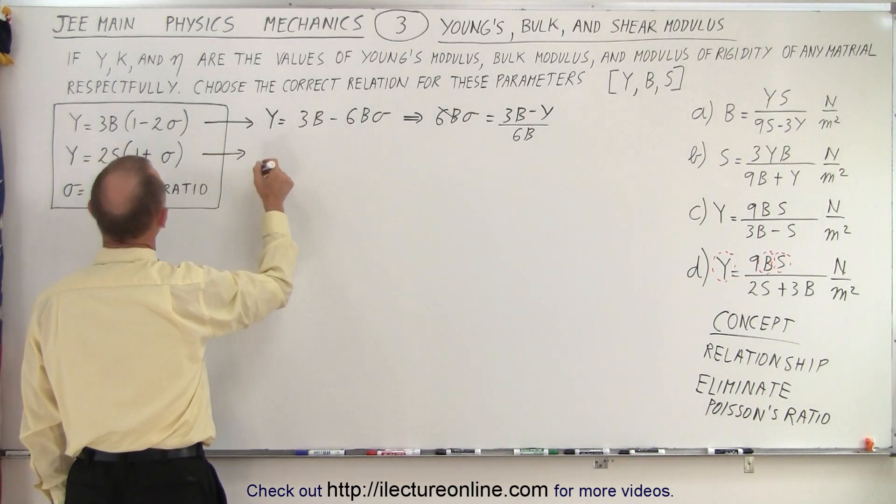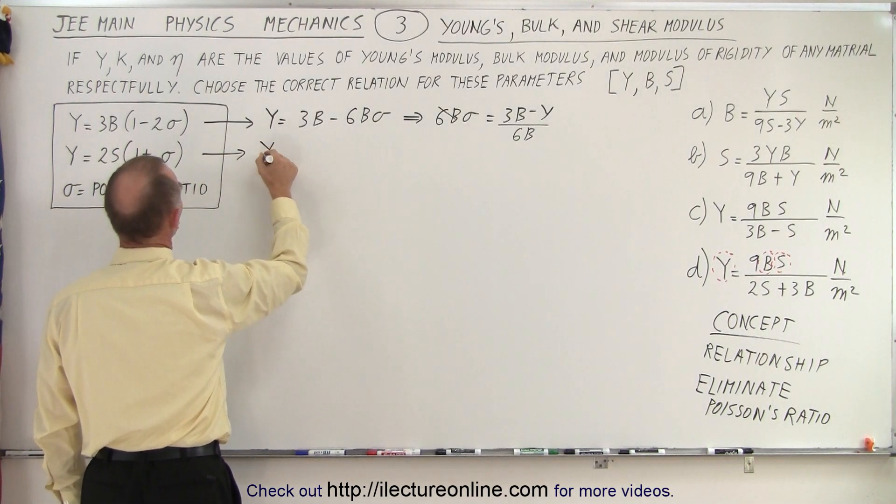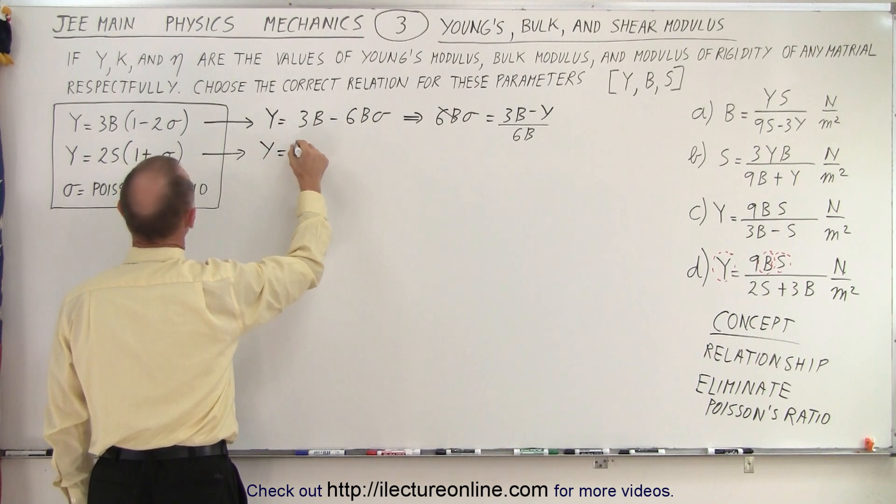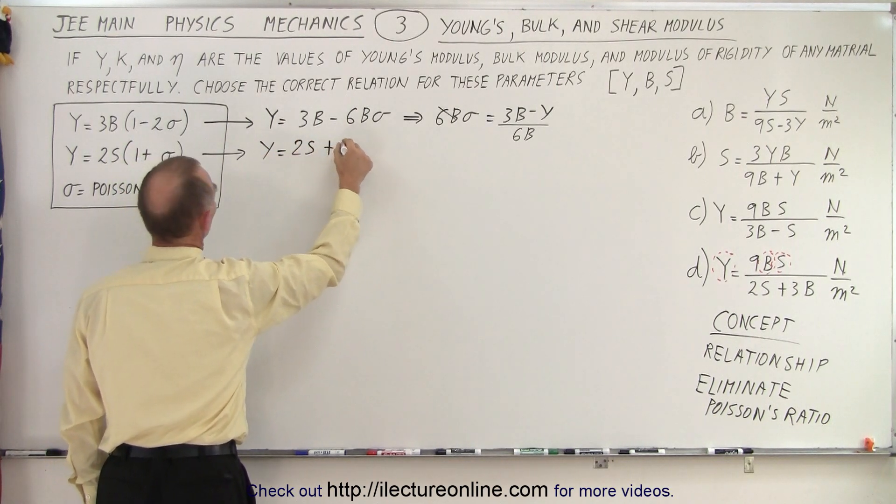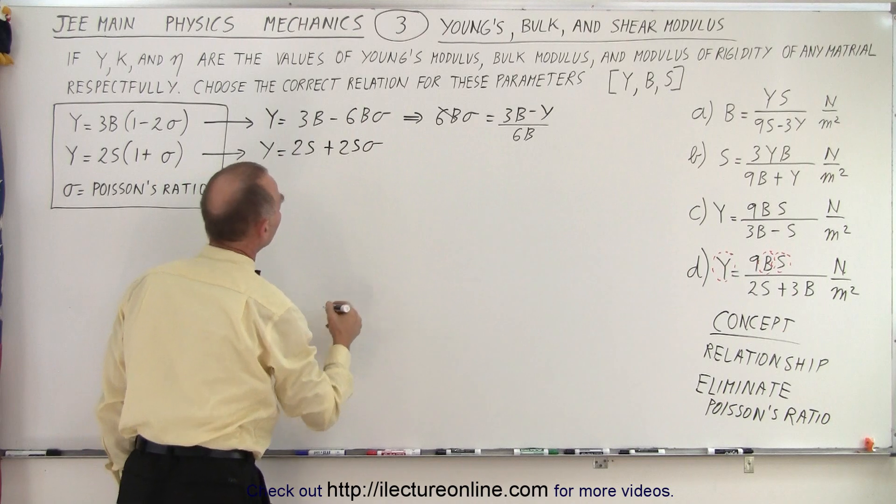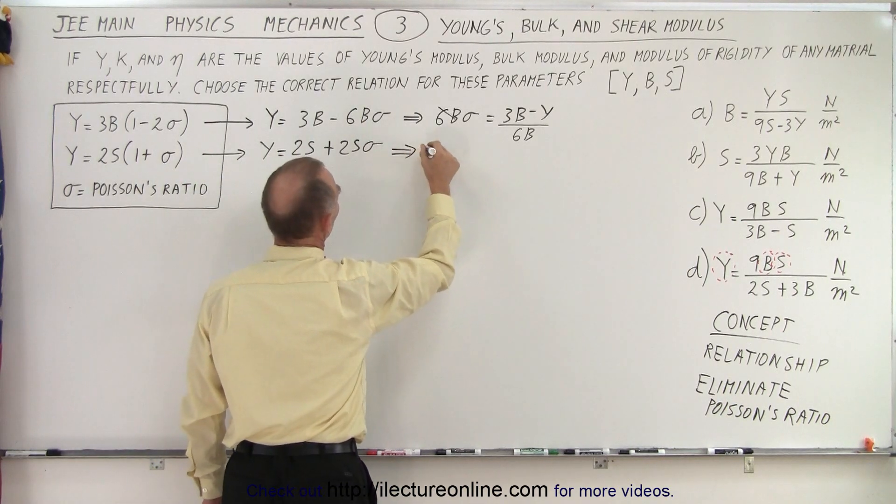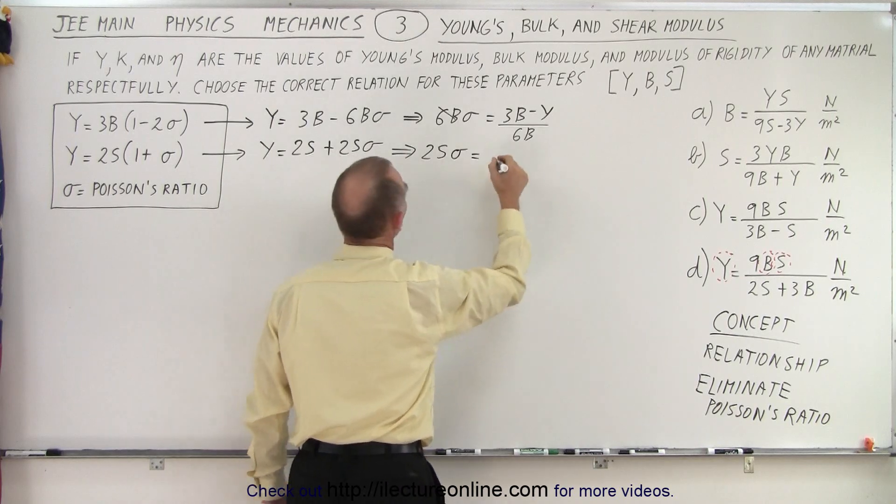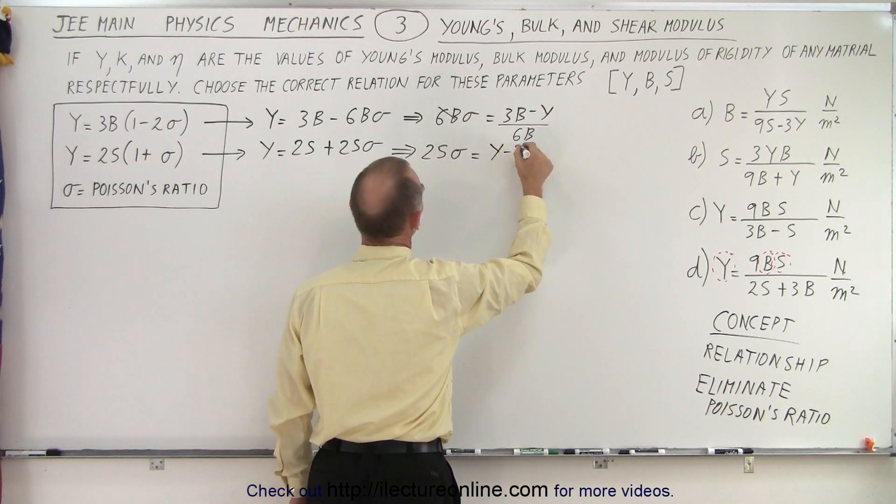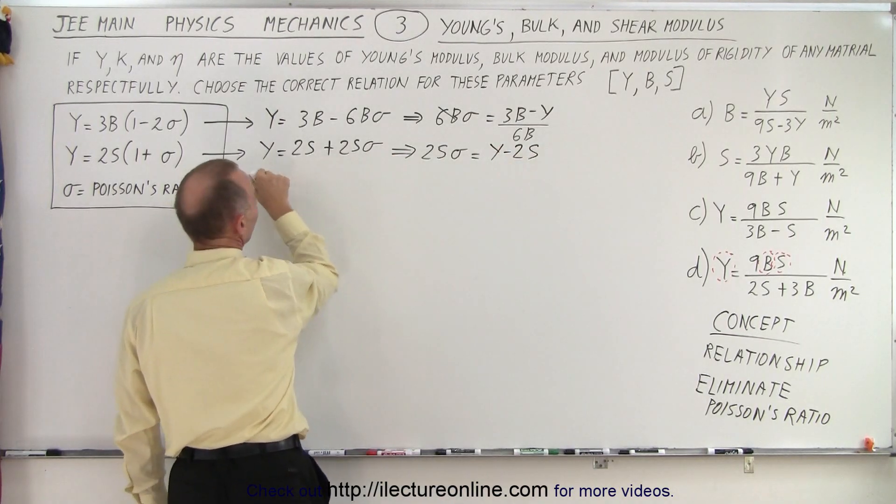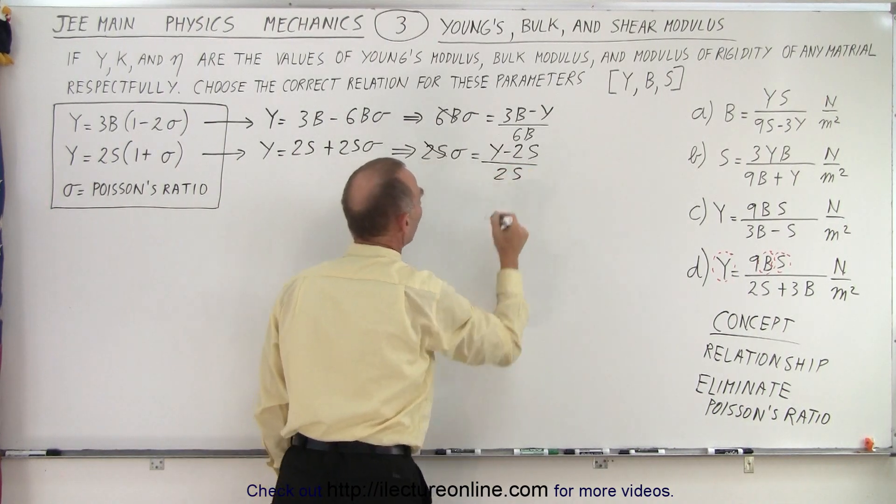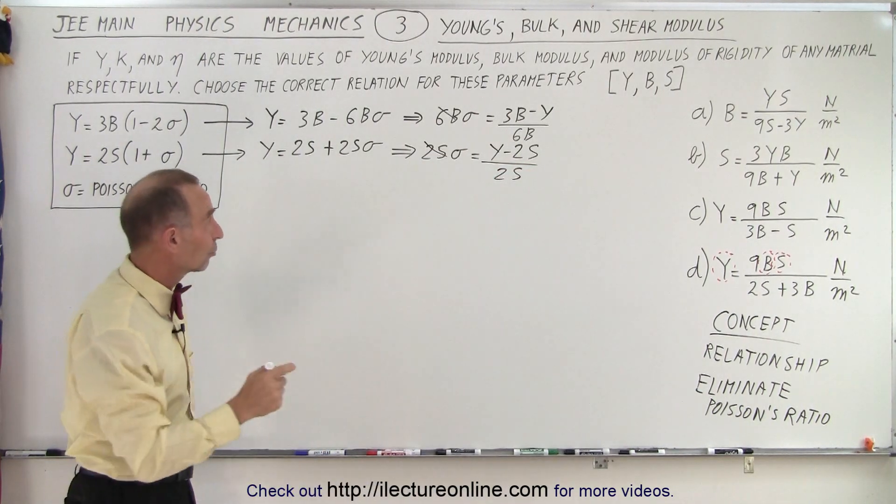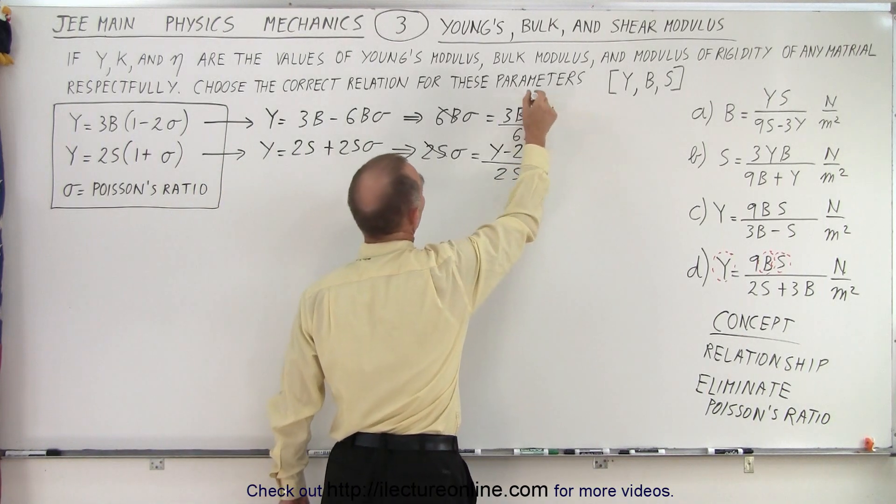Now the next equation, do the same thing. So we're going to write this as Young's modulus is equal to 2S plus 2S sigma. And that then means that 2S sigma is equal to Y minus 2S, by moving this to the other side, and then divide by 2S, we get this. So now we have the two equations in terms of Poisson's ratio.